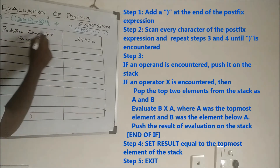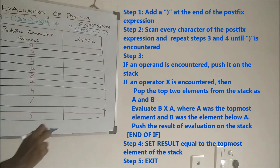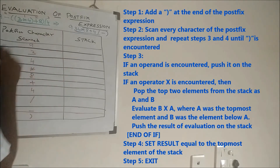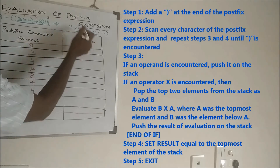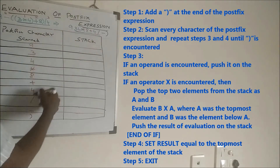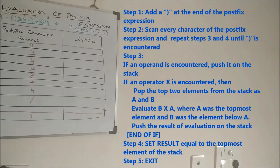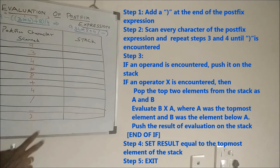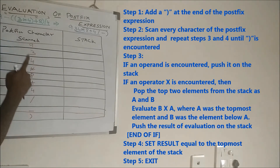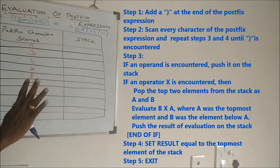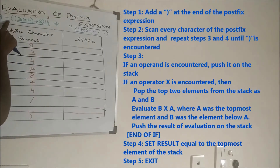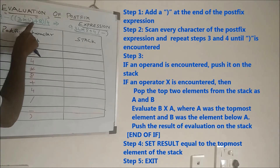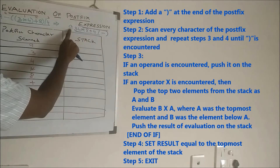Step 2: scan every character of the postfix expression and repeat step 3 and 4 until close parenthesis is encountered, meaning we scan one by one. I'm writing the characters in a table: first column is the postfix character scanned, second column is the stack. The characters are: 9, 3, 4, star, 8, plus, 4, slash, minus, close parenthesis. As far as postfix expressions are concerned, only two possibilities exist — operand or operator.